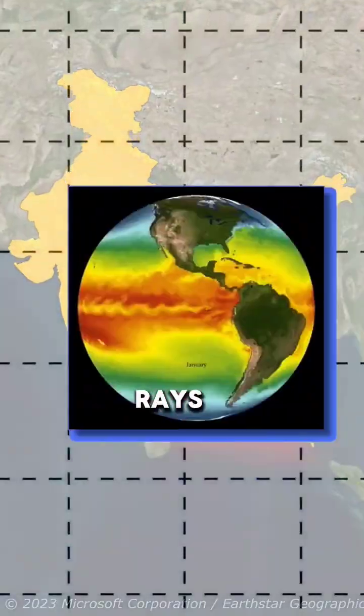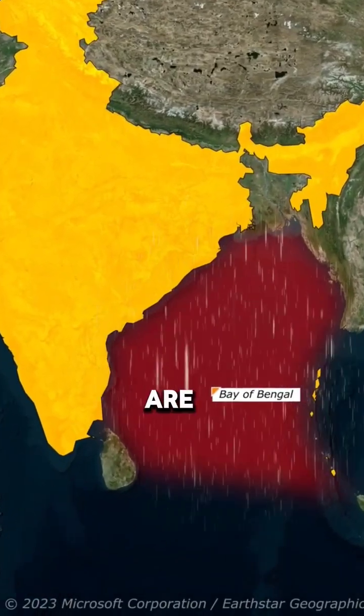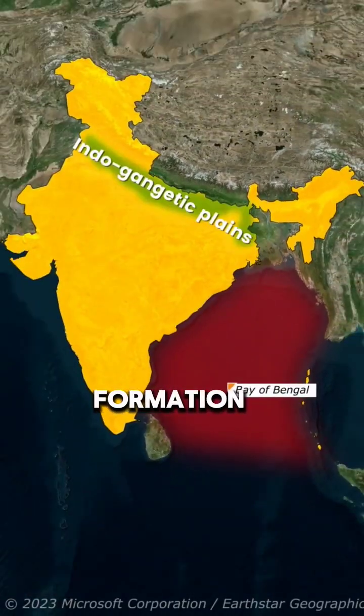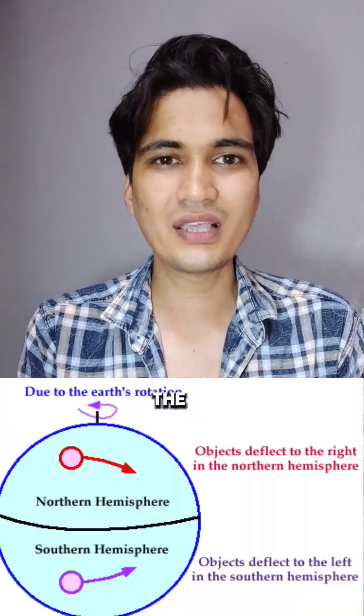Similar to how the sun's rays hit the earth during a heat wave, warm ocean water are crucial for cyclone formation. As this warm, moist air rises, it creates a low pressure area below.